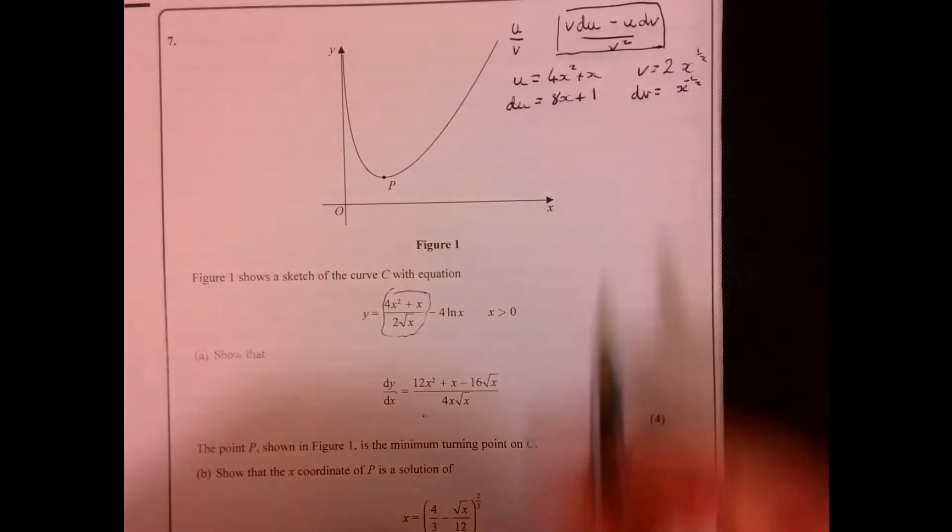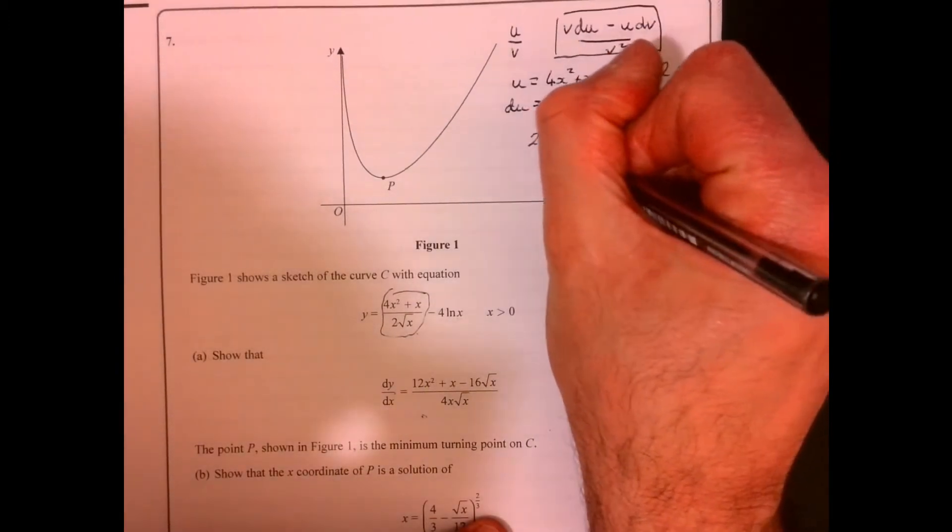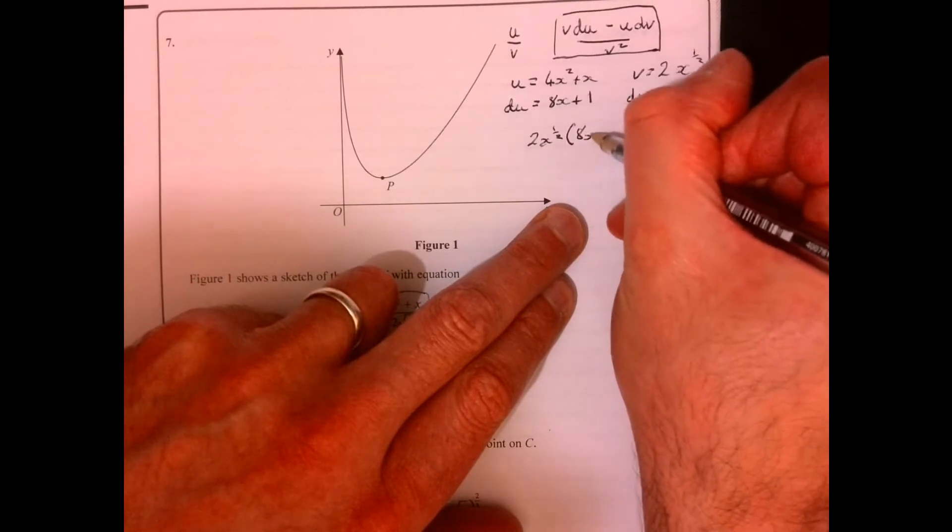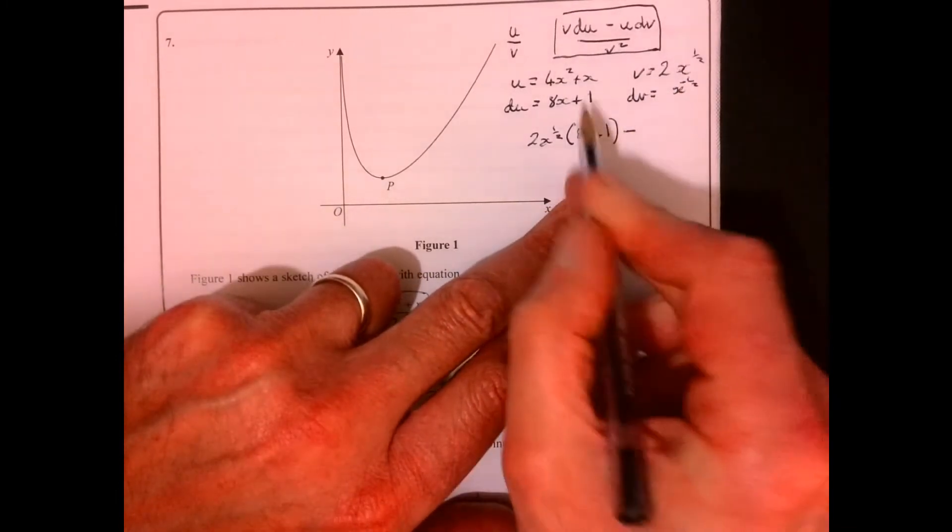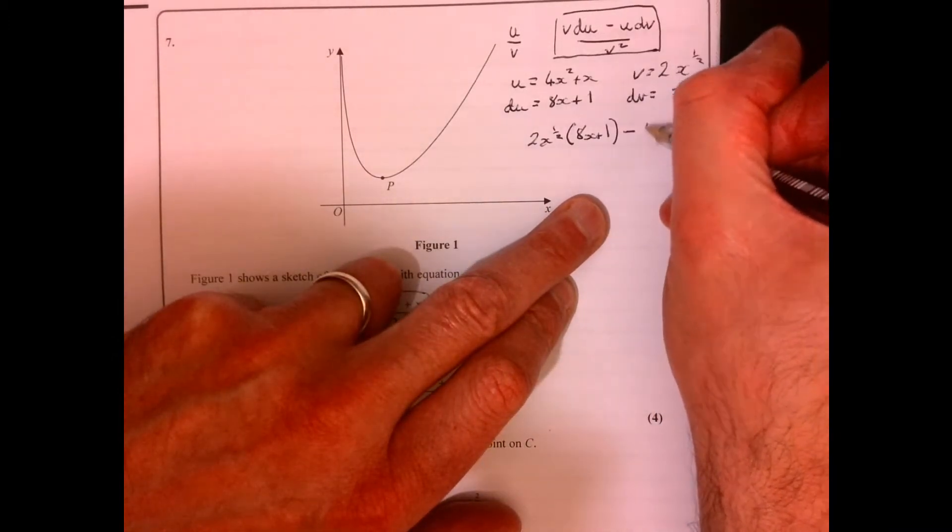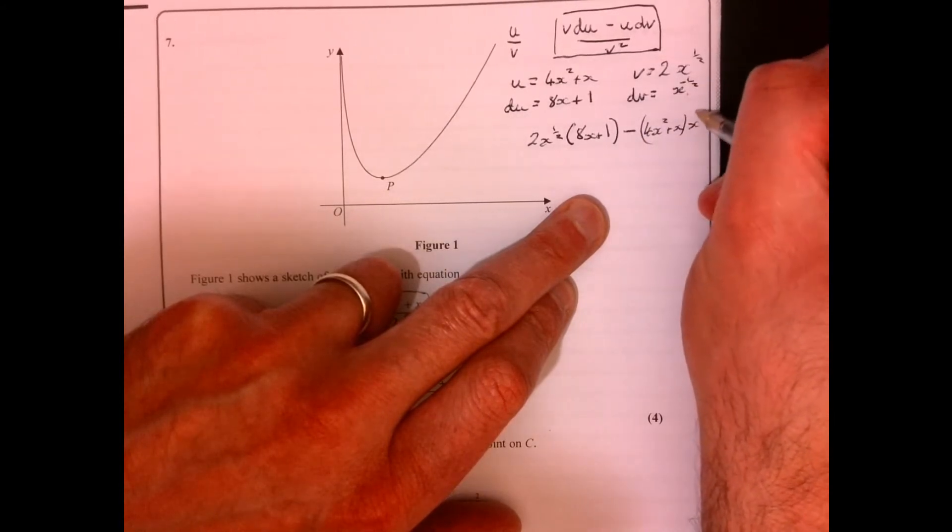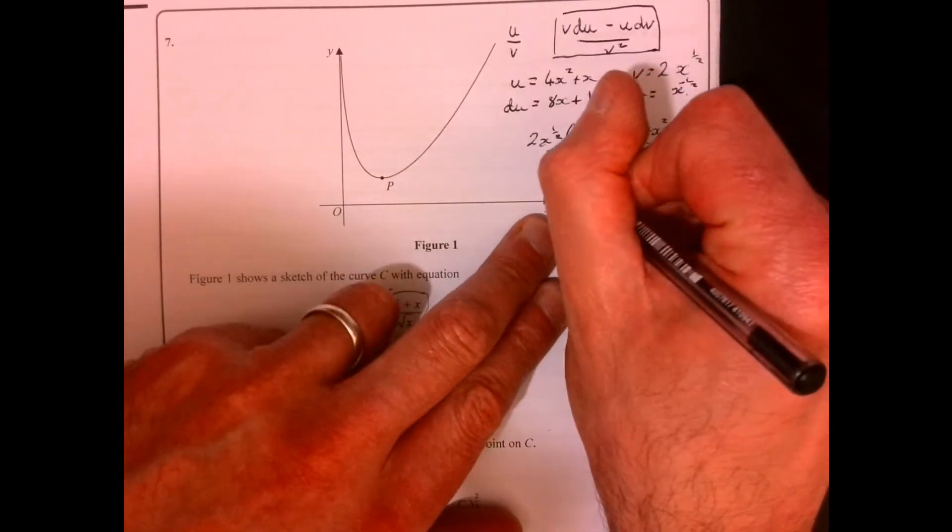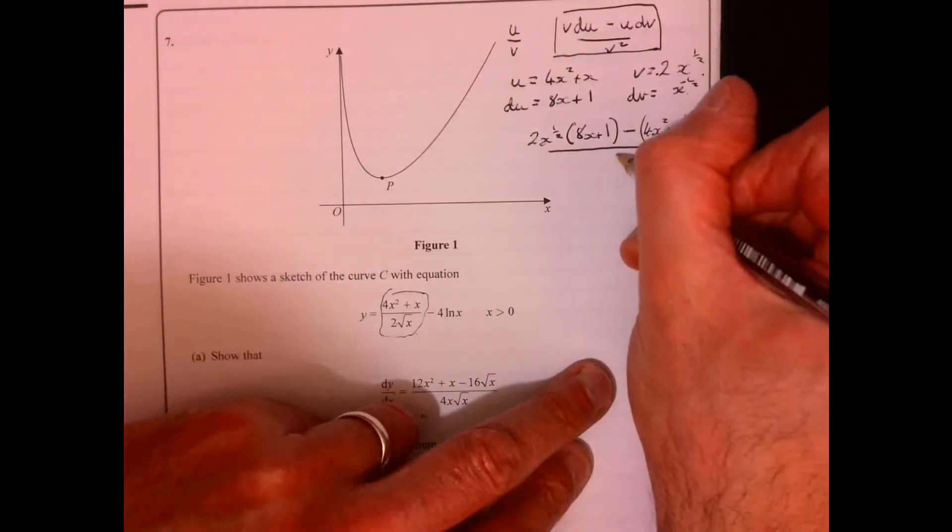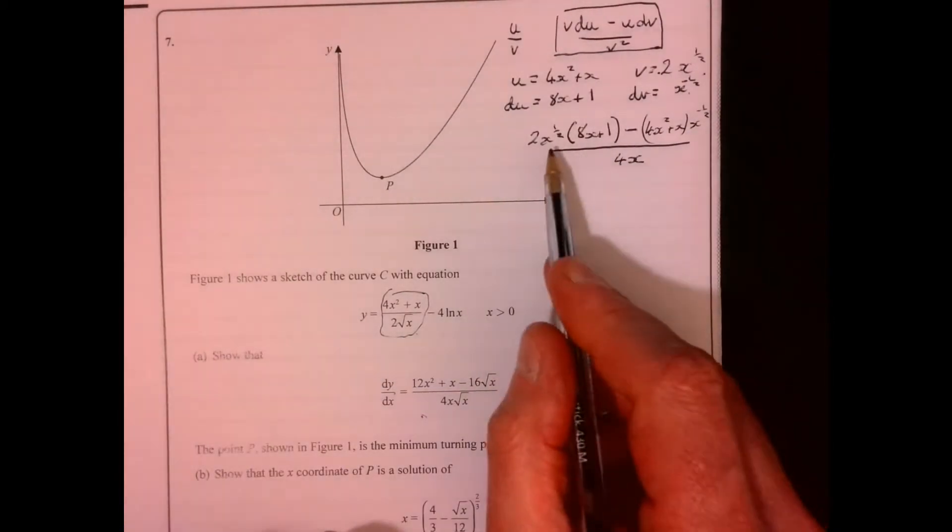Now if we just piece all that together, we've got this one times this one. Just write it all out, don't worry too much about trying to do anything yet. We're going to take away these two multiplied together, so we're going to have 4x squared plus x times x to the minus a half. And then it's all over v squared, so that squared will be 4x.